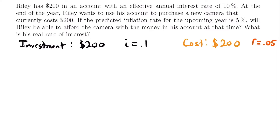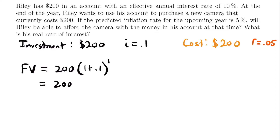Let's start by accumulating the interest on his account. The future value of his investment in one year will be equal to $200 times the accumulation factor of 1 plus 0.1 to the power of one, which equals 200 times 1.1, giving us $220. So after one year, his investment increases from $200 to $220 given that 10% interest rate.